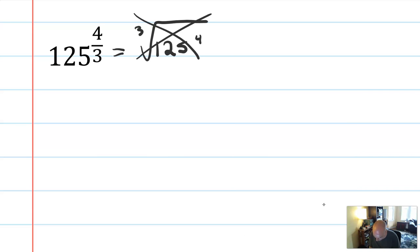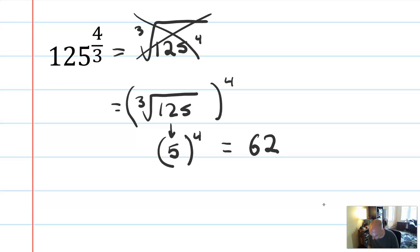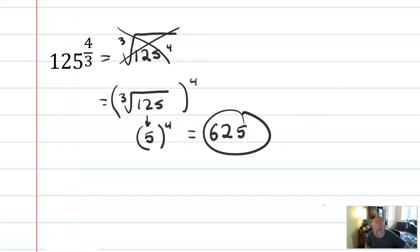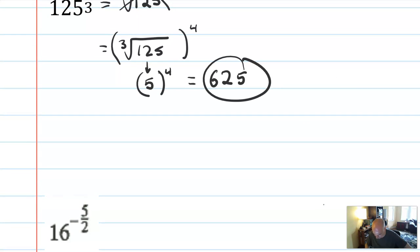This is the same as the cube root of 125 to the 4th power. Cube root of 125 is positive 5. Positive 5 to the 4th power is 625 is the same as 25 squared. So that's how you would evaluate 125 to the 4 thirds without your calculator. You won't have your calculator on most of these problems, so be able to do it without.